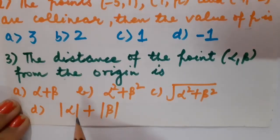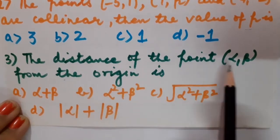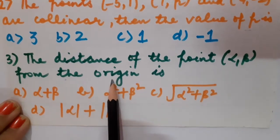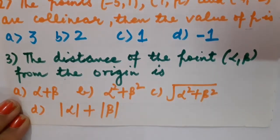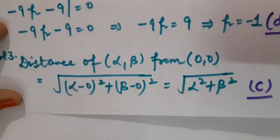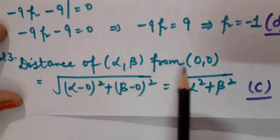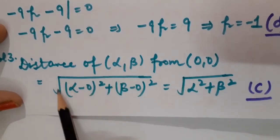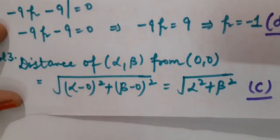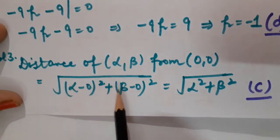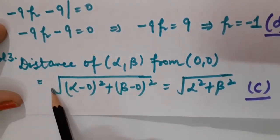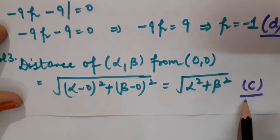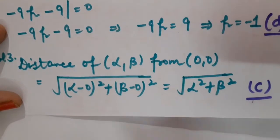Our next question: calculate the distance of the point (α,β) from the origin. The coordinates of the origin are (0,0). We simply apply the distance formula: √((x₂−x₁)² + (y₂−y₁)²). It becomes √((α−0)² + (β−0)²) = √(α² + β²). The right option is option number C.